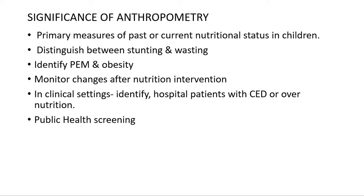The significance of anthropometry: it is a primary measure of past or current nutritional status in children. We can distinguish between stunting and wasting, which can be assessed by taking height and weight. It helps identify protein energy malnutrition and obesity, and can monitor changes after nutrition intervention. In clinical settings, it can identify hospital patients with chronic energy deficiency or overnutrition, and is also helpful in public health screening.